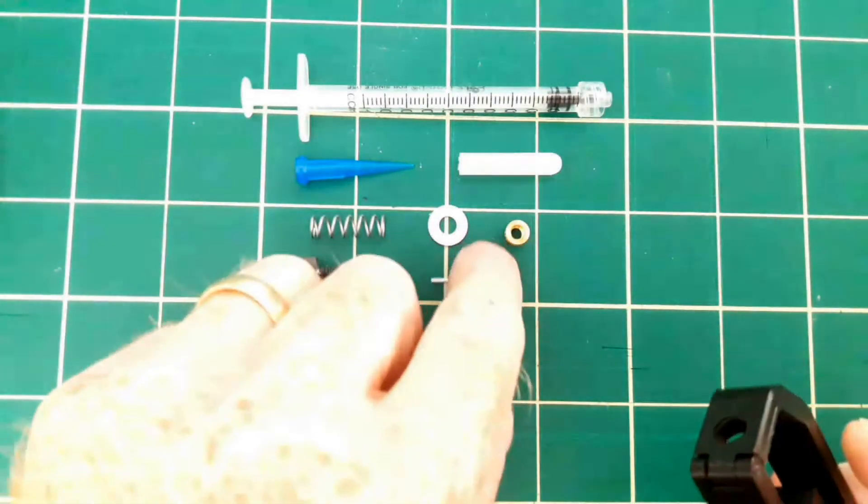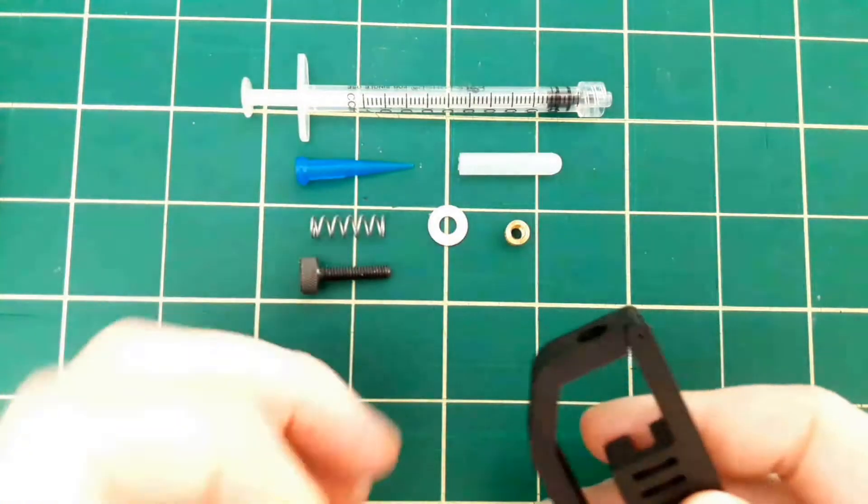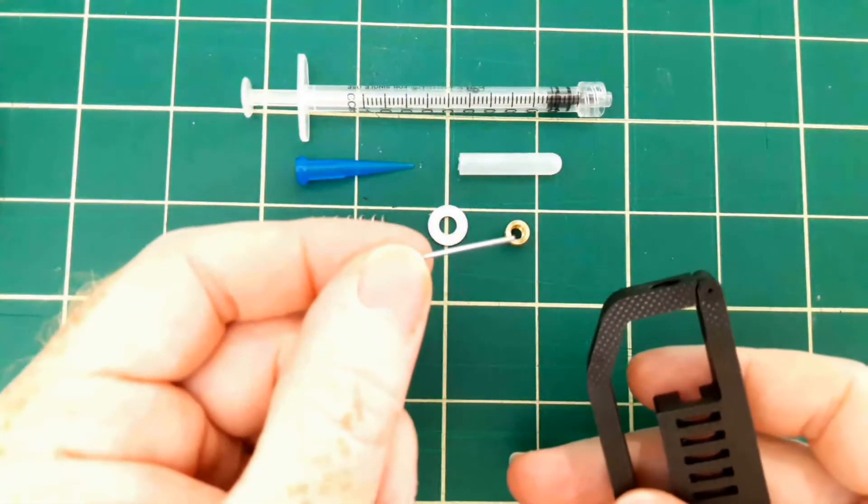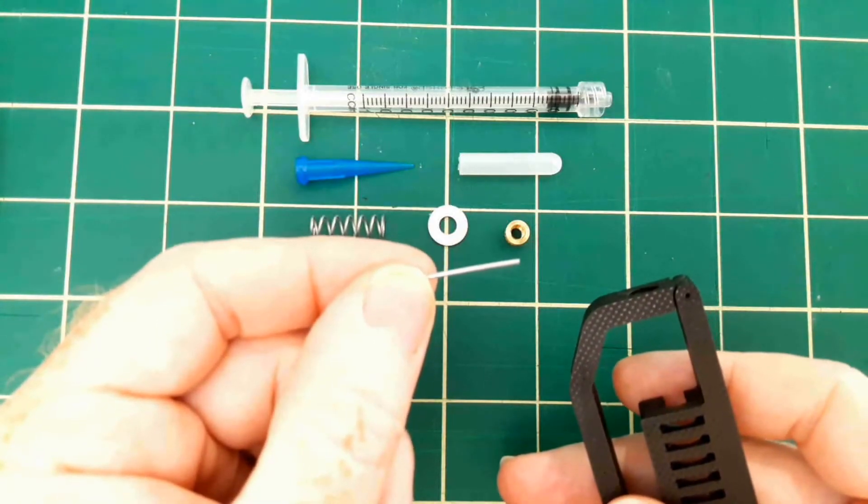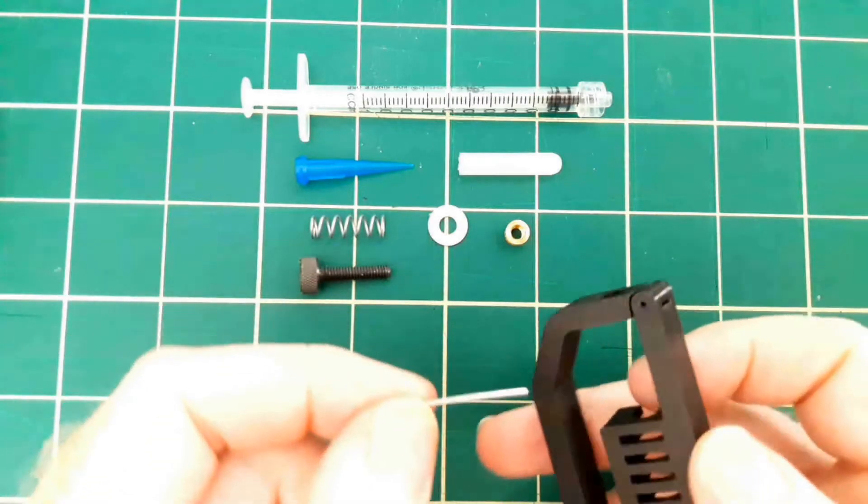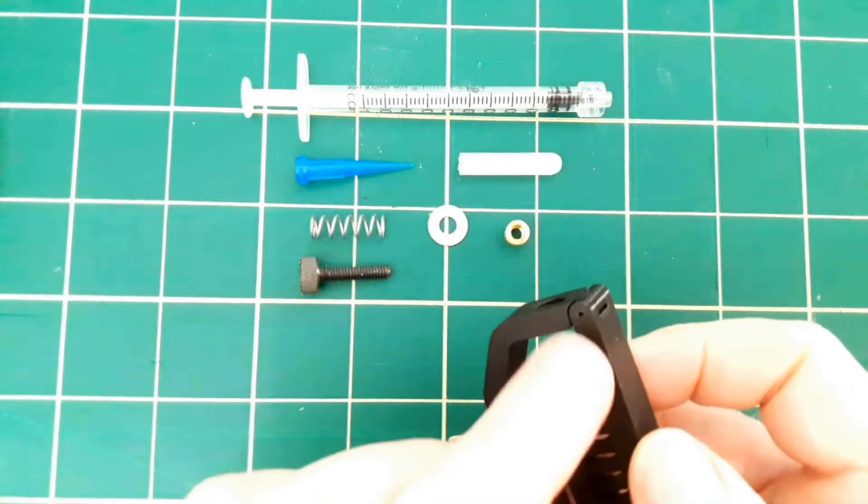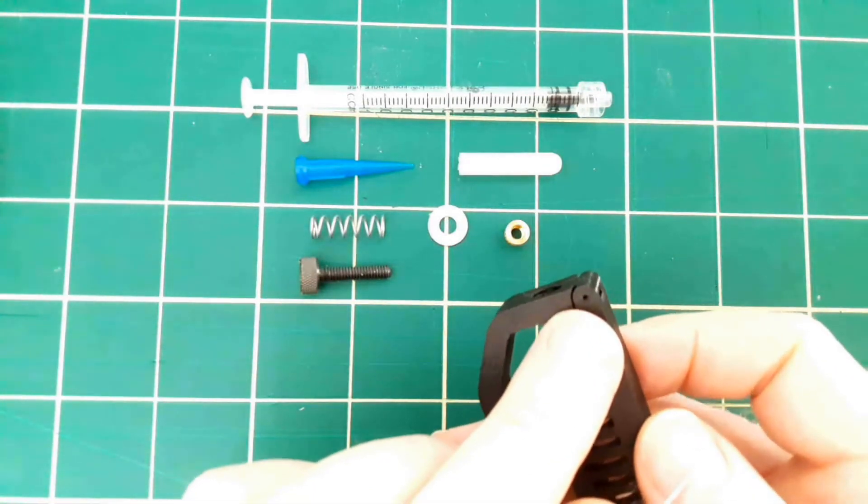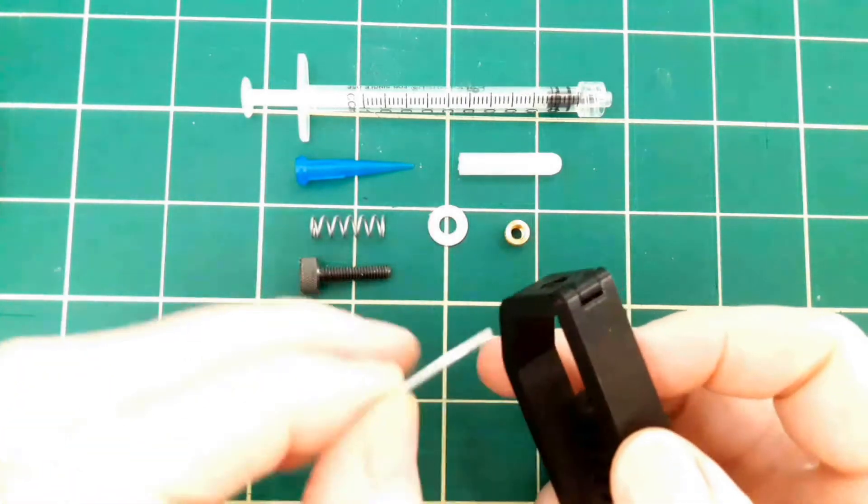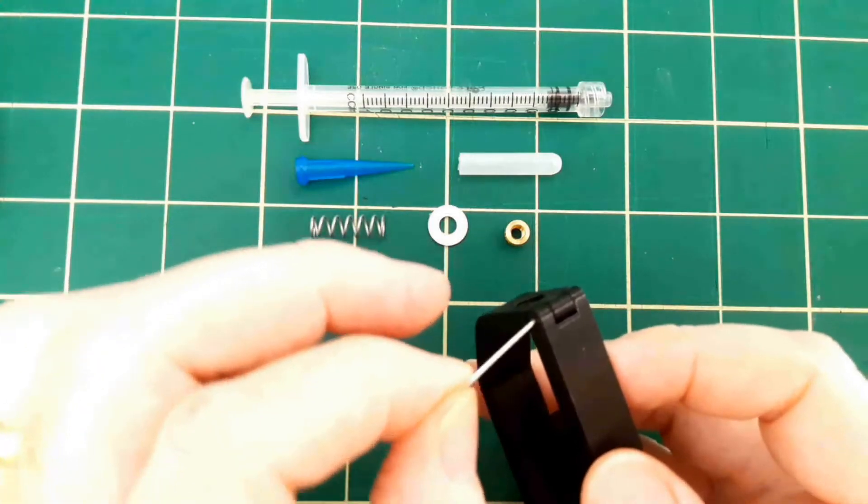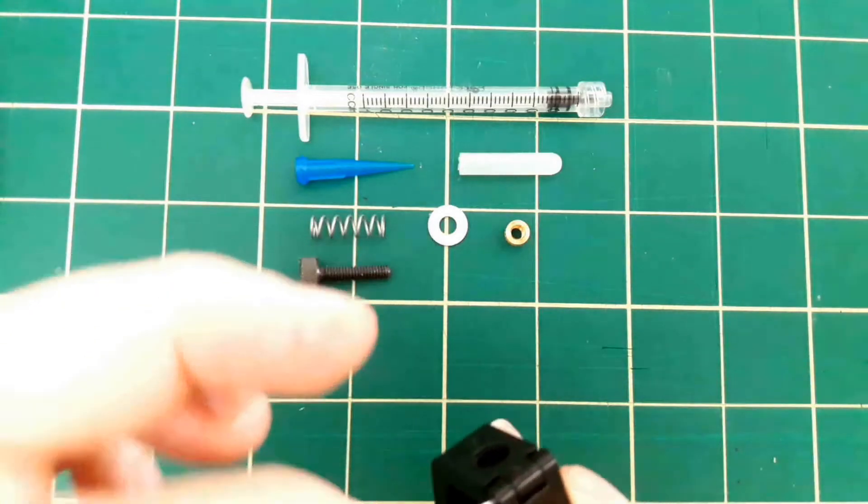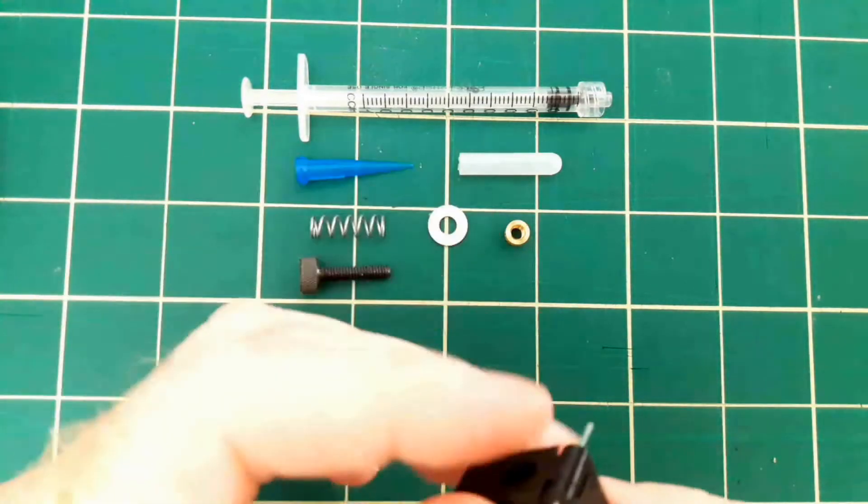The first order of business is to take this number one paper clip which I straightened out and bent a 2 millimeter piece 90 degrees through this hole which I've also opened up with a number 58 drill which is 42 mils in diameter so that that piece of paper clip can serve as a pivot point for this hinge.